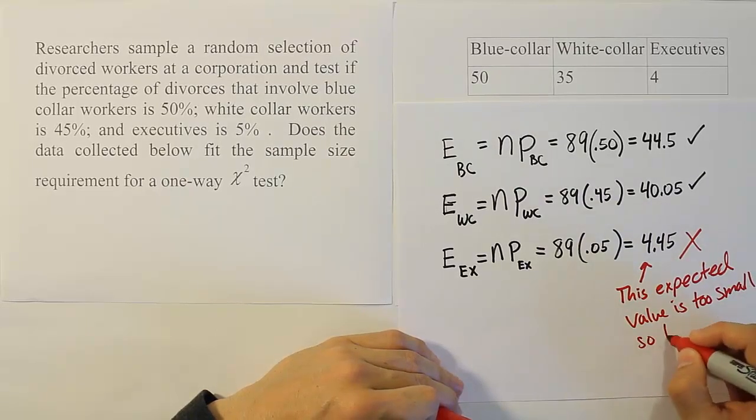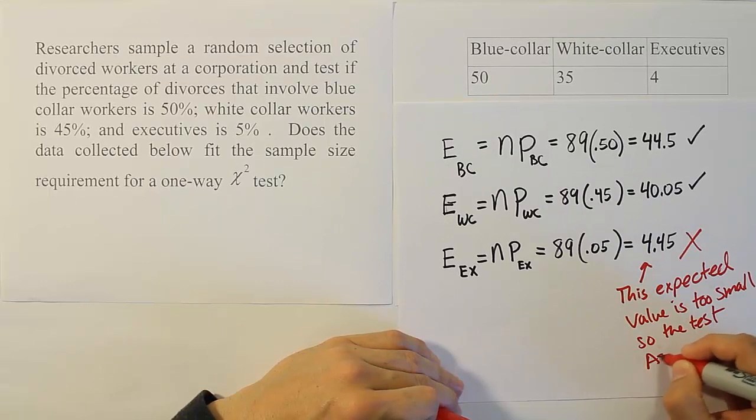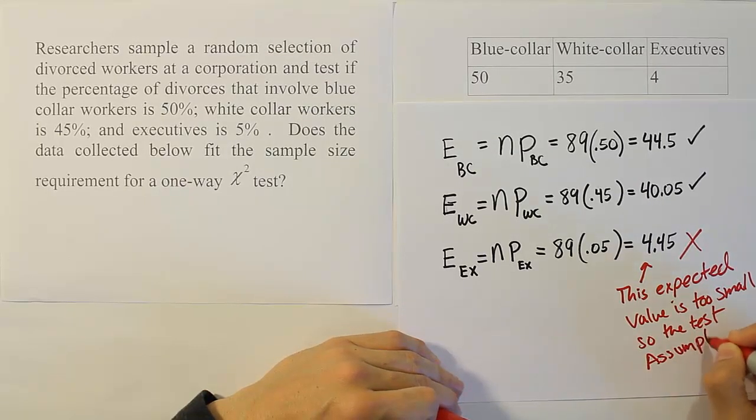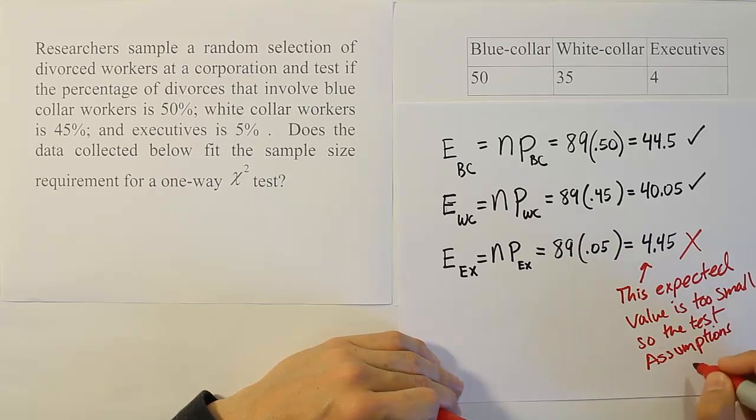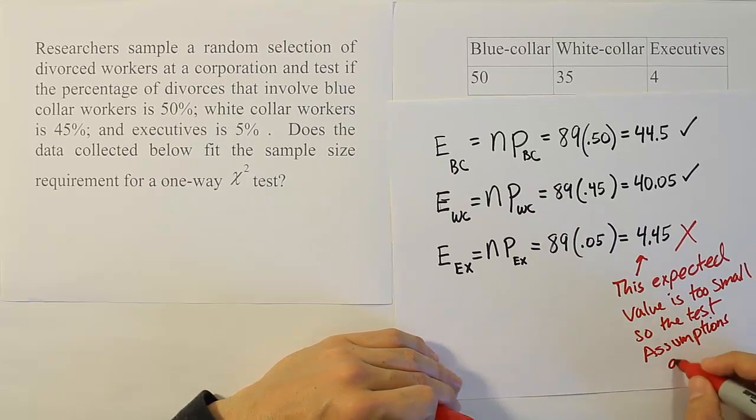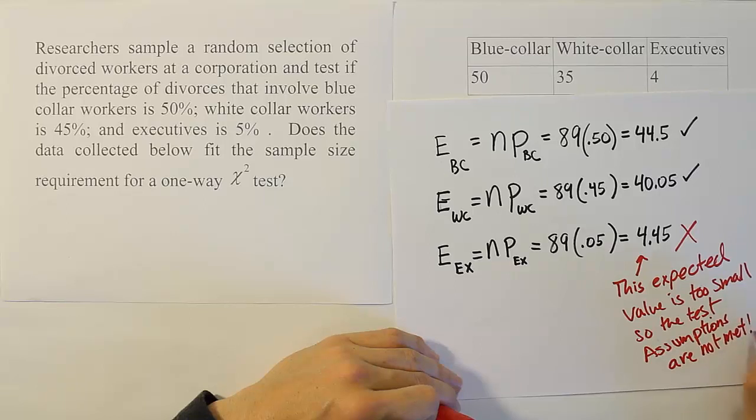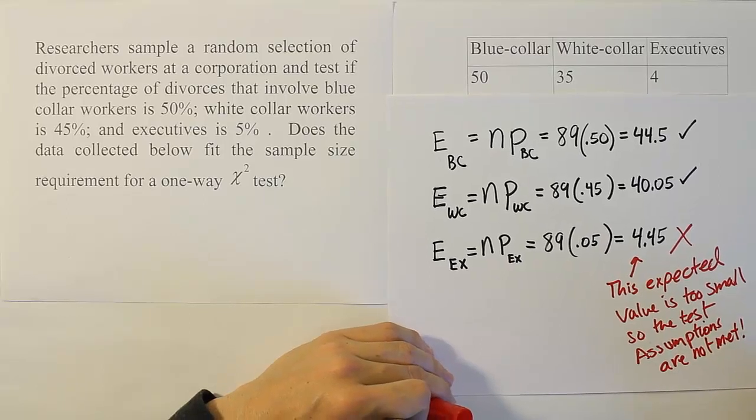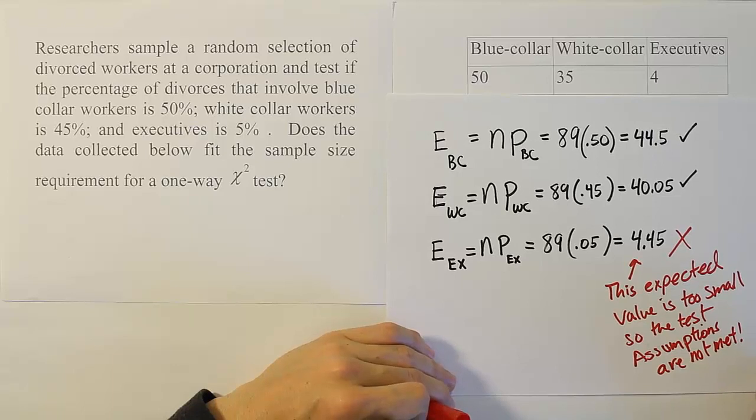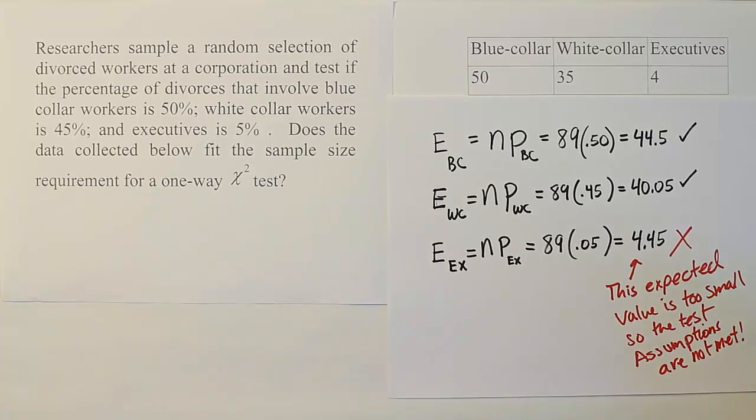The test assumptions are not met. Because that expected value for the executive cell is below 5, we can't say that we've met the assumptions for a chi-squared test. At that point, the data is not appropriate for this type of procedure.